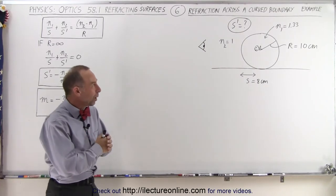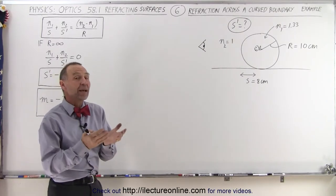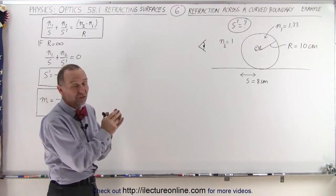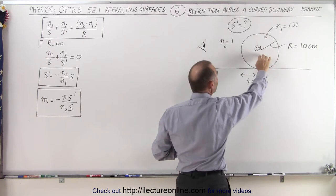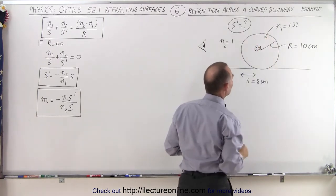Welcome to iLecture Online. What we have here in front of us is an example where we have an object, in this case a small fish, and a fishbowl. Of course this is water. Index of refraction is 1.33.